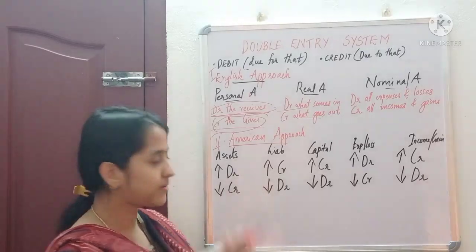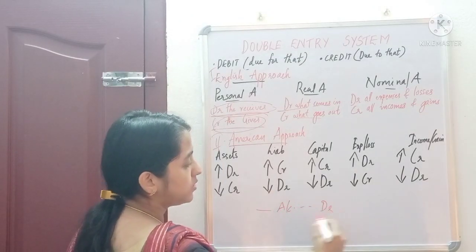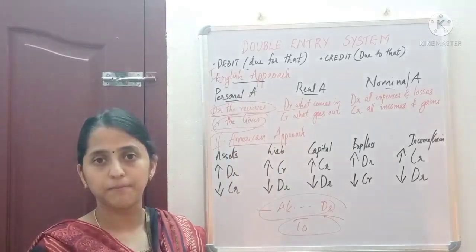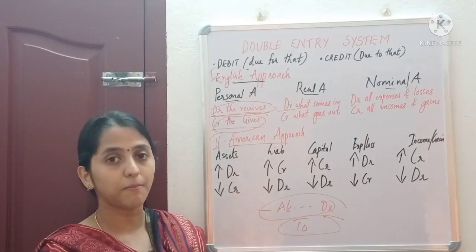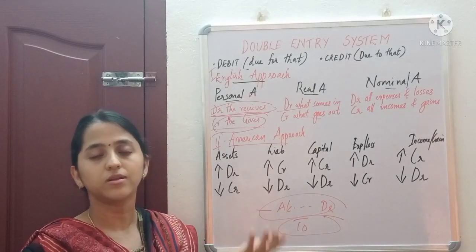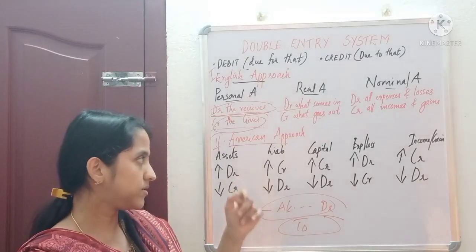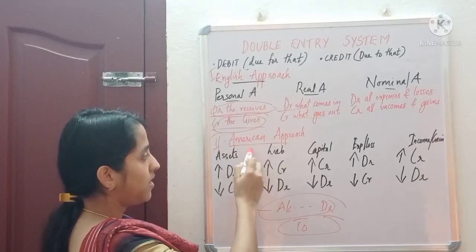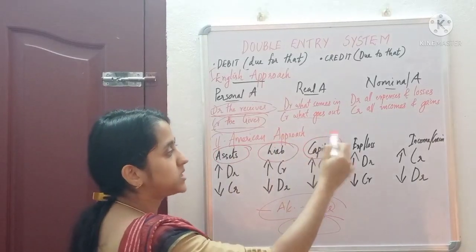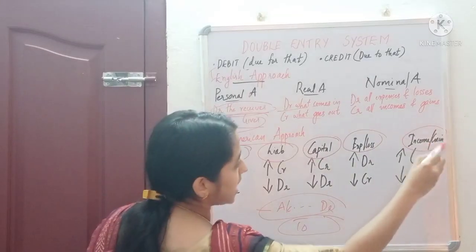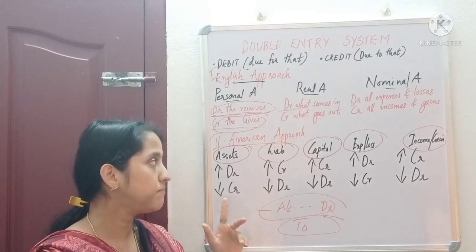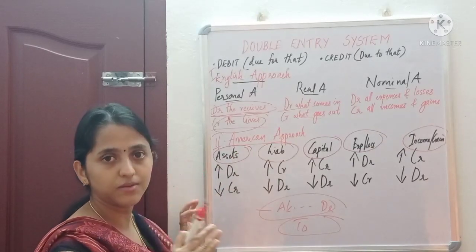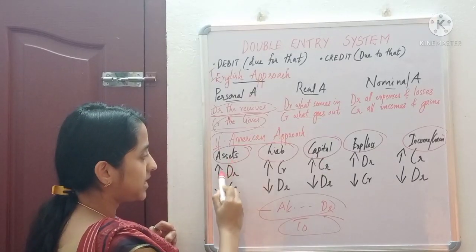We record a transaction as 'something account debit to something' — this is the debit and credit rule based on the English approach. According to the American approach, accounts are classified into five categories: assets, liabilities, capital, expenses or losses, and incomes and gains. The rule of debit and credit is applied based on these five classifications. If it is an asset and the asset increases, we debit it.